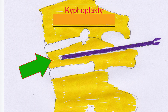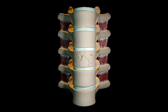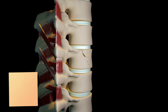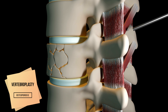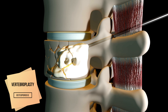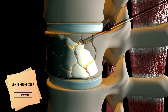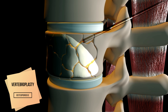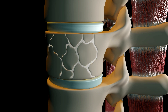Two procedures are popular: vertebroplasty and kyphoplasty. Both types of surgeries can help the fracture heal. This is a minimally invasive spine treatment designed to reduce the pain caused by a fractured vertebra and stabilize the bone. A low-viscosity cement is injected directly into the collapsed vertebral body under high pressure with X-ray guidance, which stabilizes the fracture and relieves the associated pain.